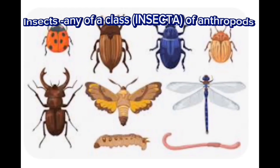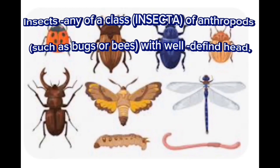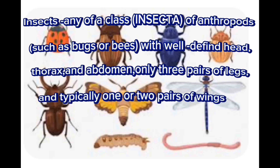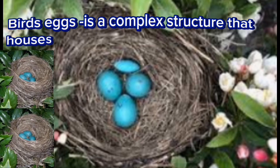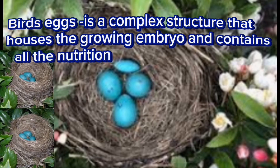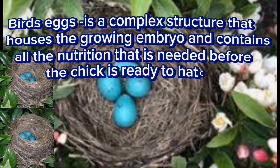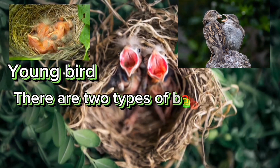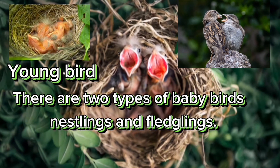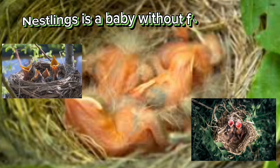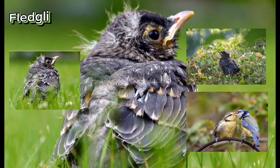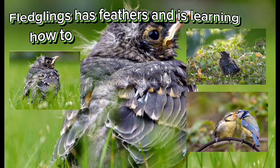Insects: any of a class Insecta of arthropods such as bugs or bees, with a defined head, thorax, and abdomen, only three pairs of legs and typically one or two pairs of wings. Birds' eggs is a complex structure that houses the growing embryo and contains all the nutrition needed before the chick is ready to hatch. There are two types of baby birds: nestlings and fledglings. A nestling is a baby without feathers or with thin feathers that has not left the nest. A fledgling has feathers and is learning how to fly.